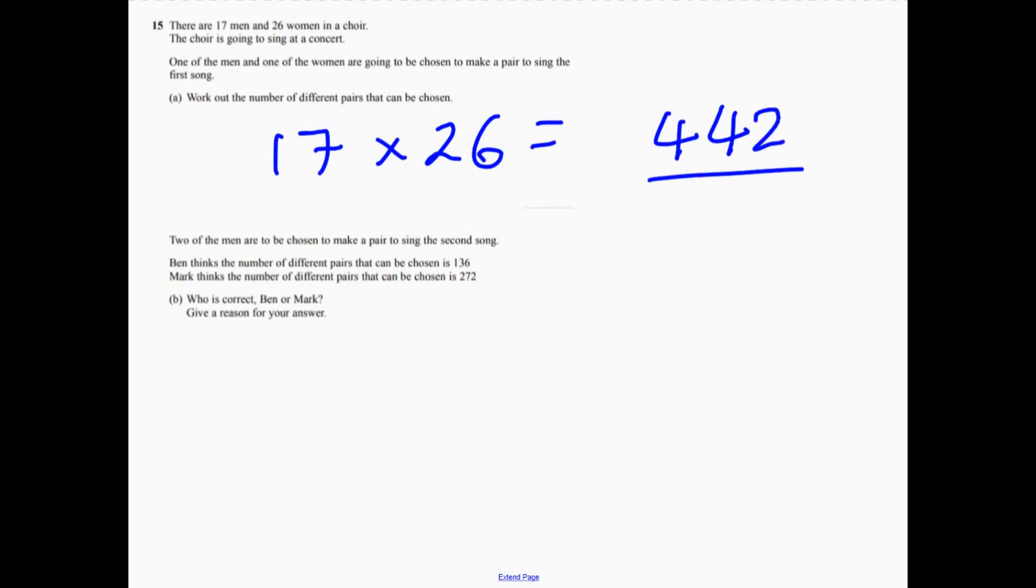Now, on part B, it says two of the men are to be chosen to make a pair to sing the second song. Ben thinks the number of different pairs that can be chosen is 136. Mark thinks the number of different pairs that can be chosen is 272. Who's correct? Ben or Mark?